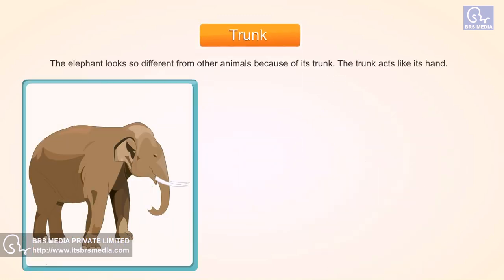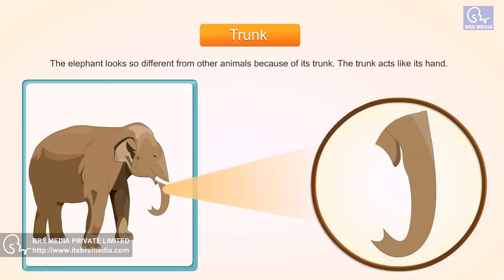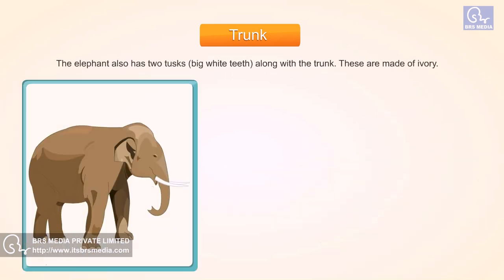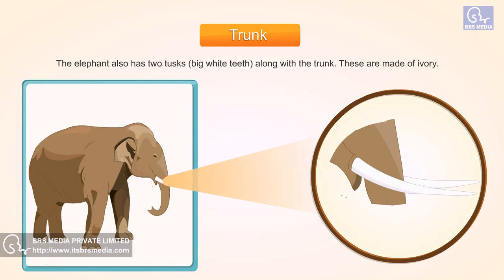The elephant looks very different from other animals because of its trunk. The trunk acts like its hand. The elephant also has two tusks — big white teeth made of ivory.